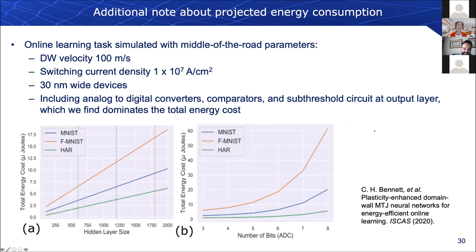I also want to address energy consumption. My colleague Chris Bennett at Sandia calculated the total projected energy cost for these domain wall MTJs in a full network where synapses and neurons are all made of domain wall MTJs. He assumed middle-of-the-road parameters: domain velocity of 100 meters per second, switching current density of about 1×10⁷ A/cm², and 30 nanometer wide devices. Including the analog-to-digital converters, comparators, and sub-threshold circuits needed at the output layer, he found those output circuits actually dominate the total energy cost, not the domain wall MTJ circuit itself.